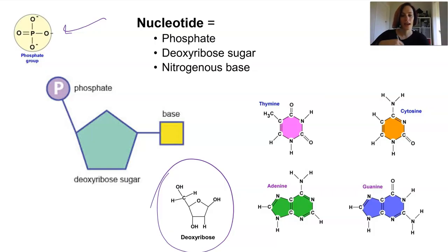Now the nitrogenous bases are one of four options in DNA and you may have seen these in early years in year 10 and referred to them by the first letter. So T, C, G and A for thymine, cytosine, guanine and adenine.